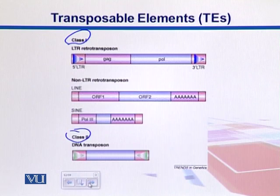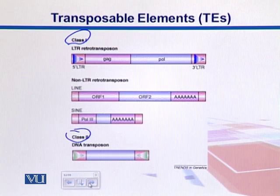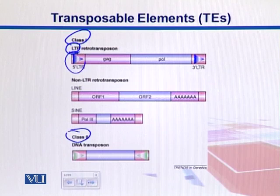Retrotransposons are the ones that have the ability of reverse transcription. They have RNAs, and those RNAs get converted into cDNAs — in this way they replicate. They have long terminal repeats at their ends, one on each side, and these repeats are not inverted but are forward repeats, oriented in the same direction.